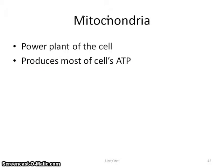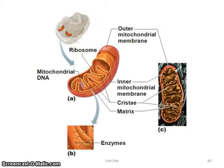Let's start with the mitochondria. It's the power plant, and it produces the cell's ATP. It looks kind of like a little bean with channels inside, but its most important role is to produce energy for the cell's functions.